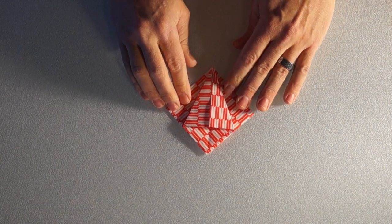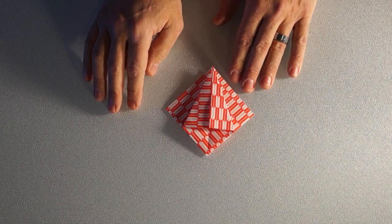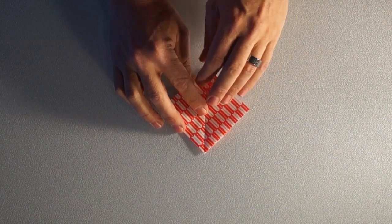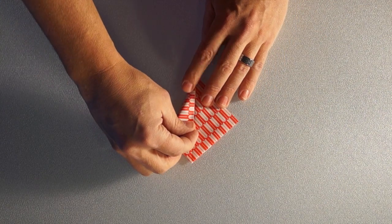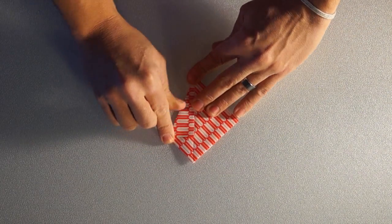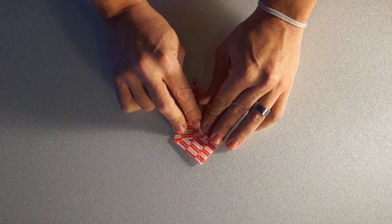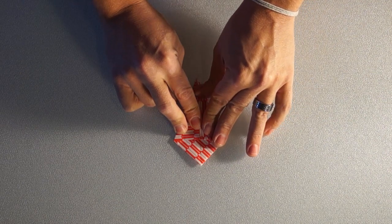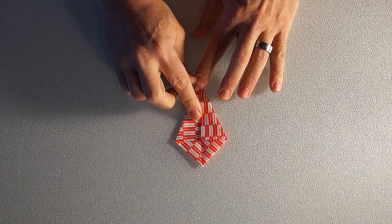And then I'm going to do the same thing on the other side to match this up. So now, as you can see on the top layer, I have something that almost looks like a kite. Now I'm going to flip it over and I'm going to do the same thing on the other side. So now I have my kite.